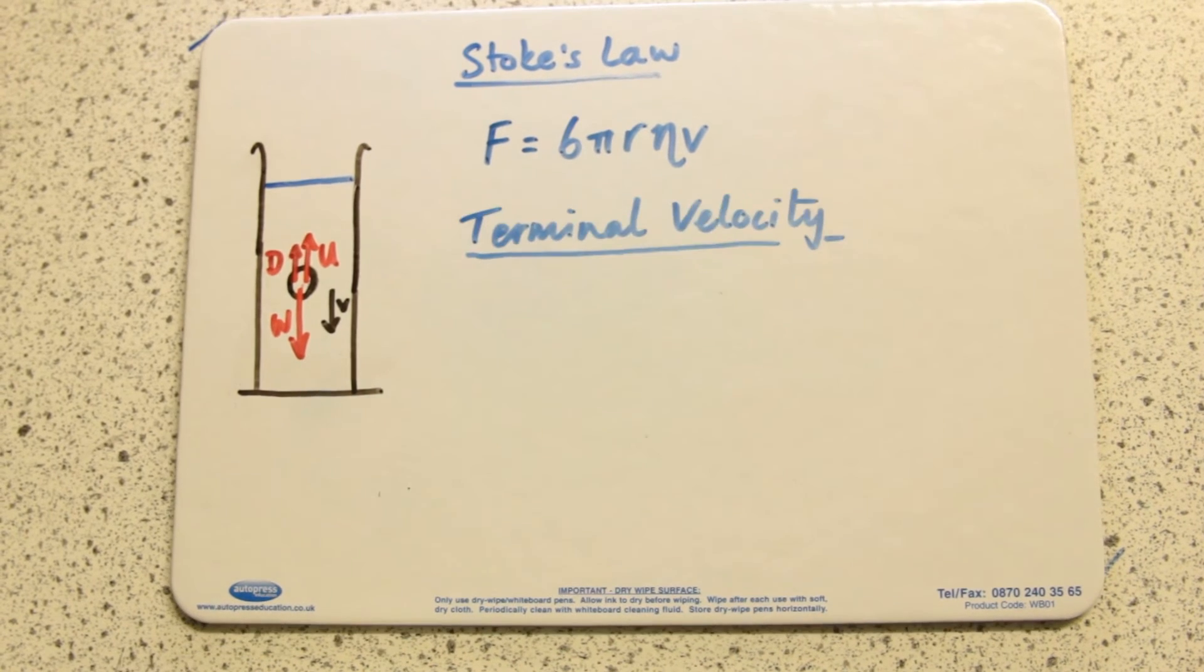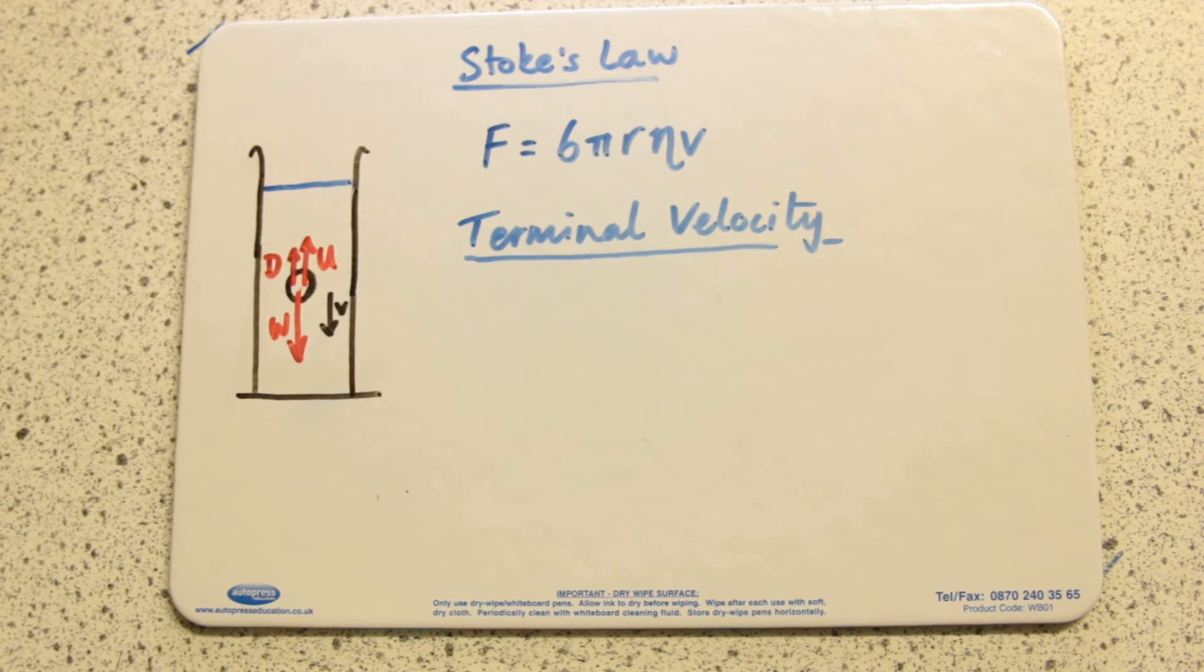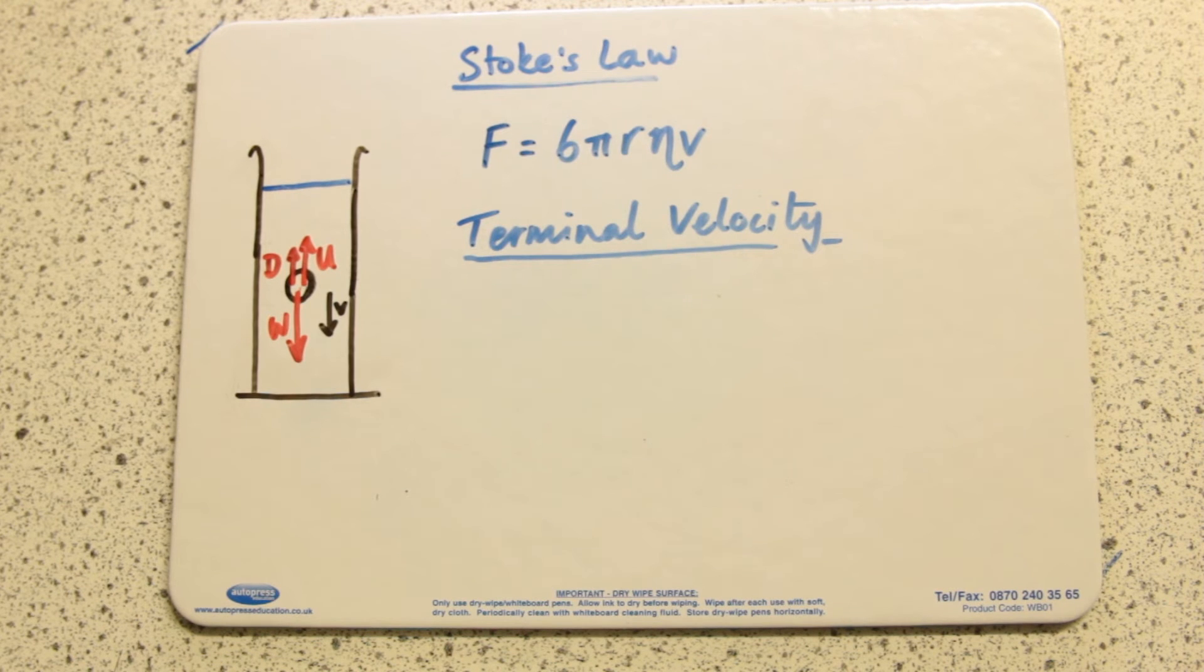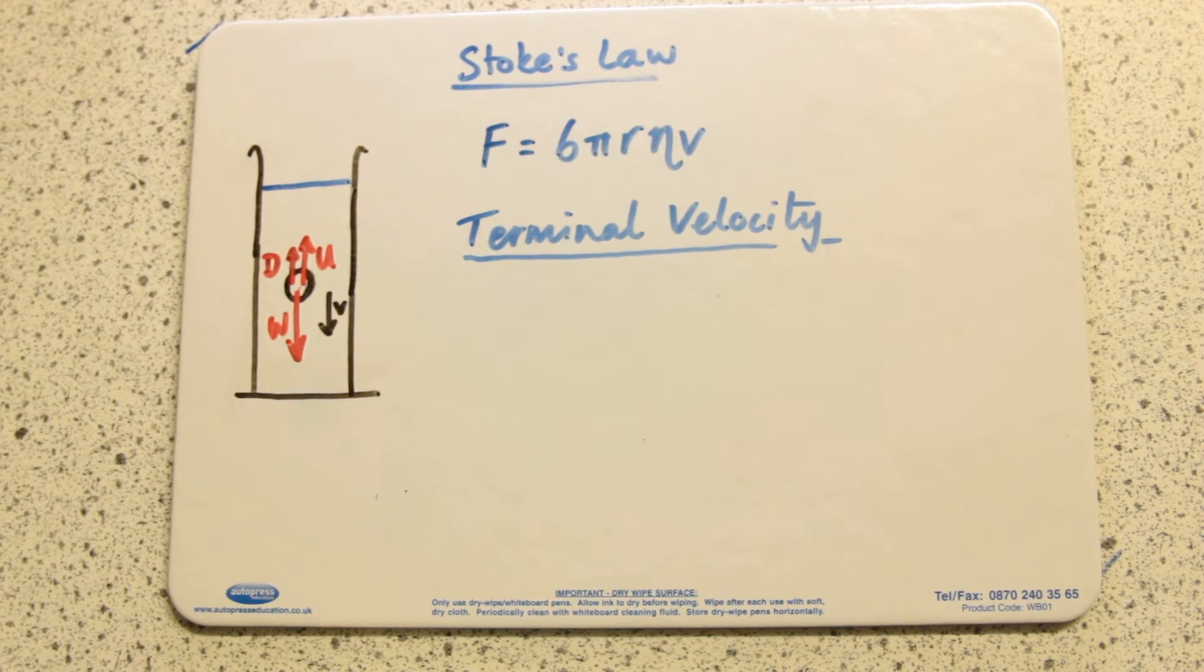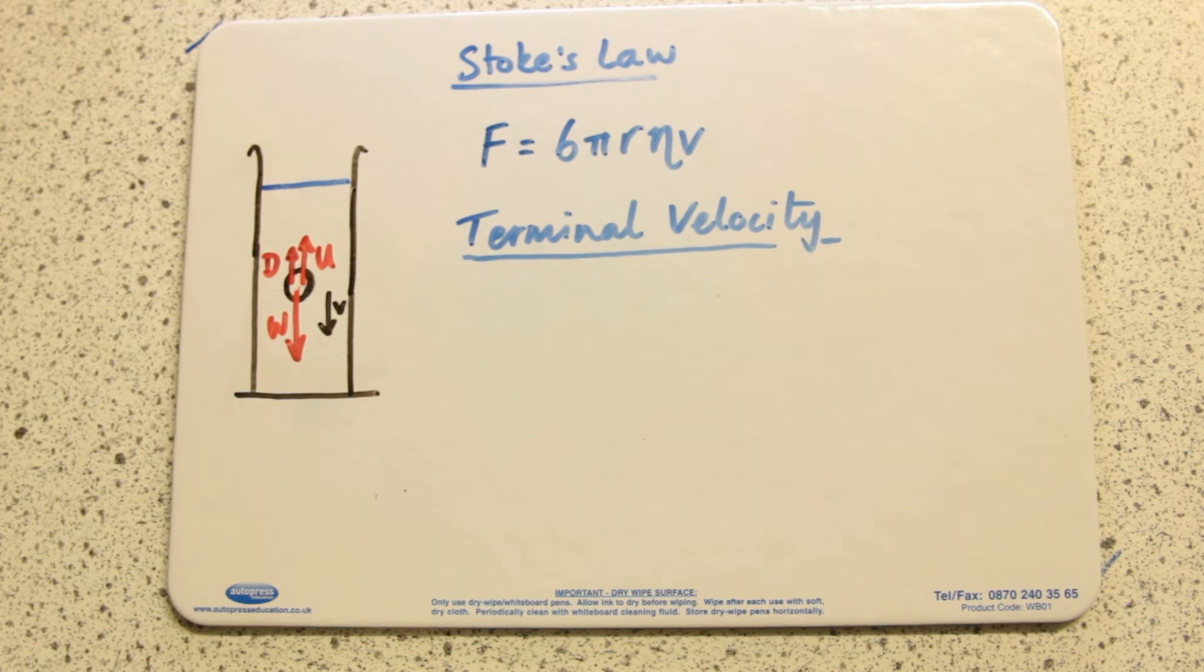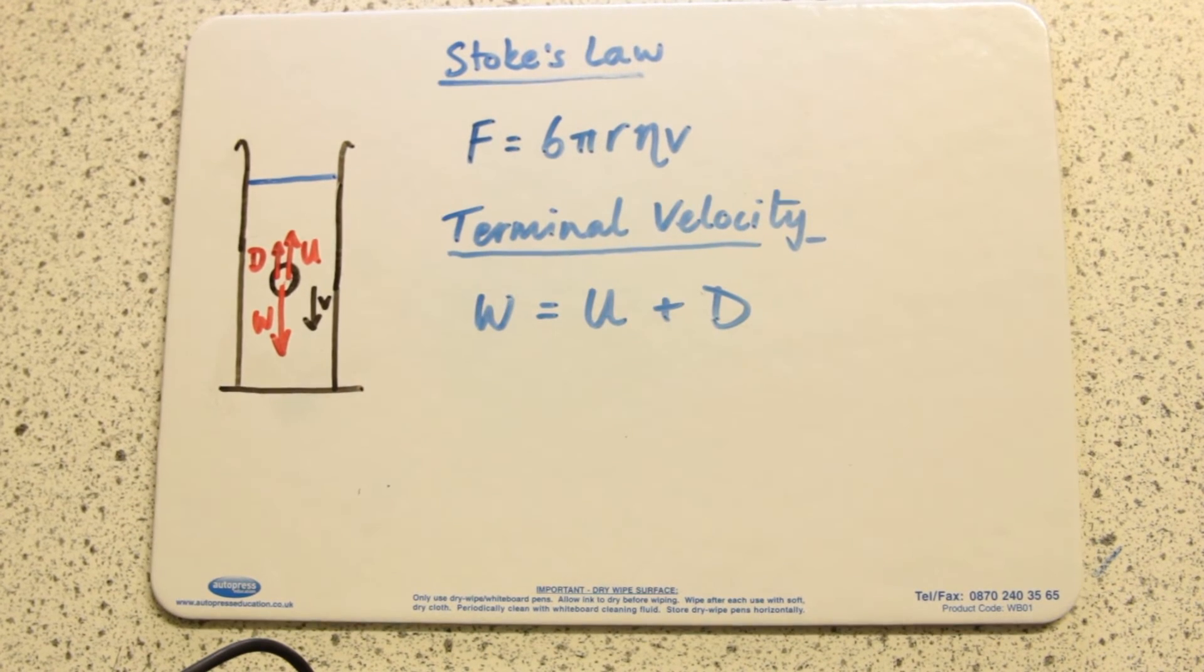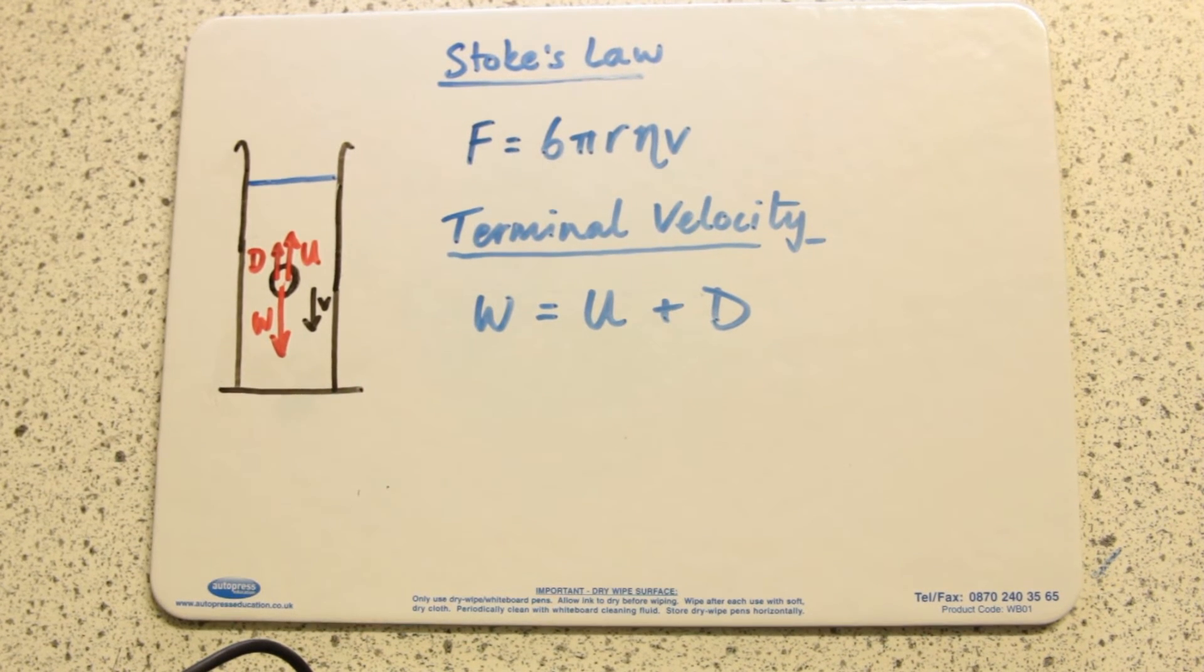If this ball was falling at terminal velocity, then we know there's no acceleration. In that case, the weight is equal to the upthrust plus the drag. The really typical question in this topic is to give you a diagram and ask you for an expression which equates the three forces.